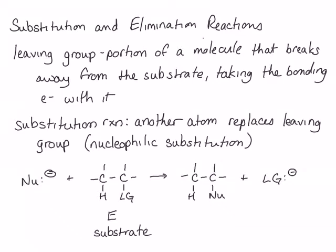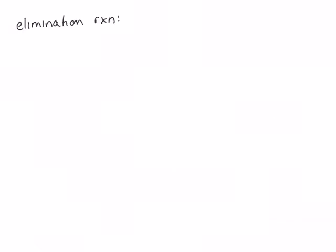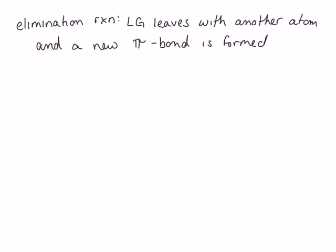In an elimination reaction, a similar substrate is typically used. However, in this reaction, the leaving group leaves with another atom, and a pi bond is formed. The substrate for this reaction will look the same as for the substitution reaction, but rather than a nucleophile, the other reactant will be a base.